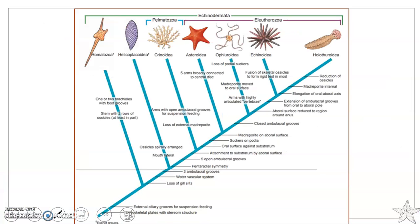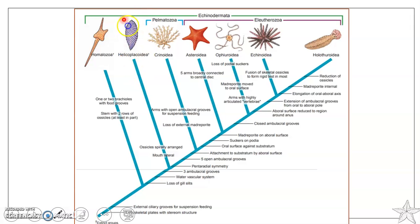Looking at the features from a phylogenetic perspective, the ancestors of Echinodermata had exoskeletal plates with stereome structure and external ciliary groups for suspension feeding. Such ancestors gave rise to the class Homalozoa, which includes only extinct organisms. Ancestors that lost gills while retaining an aquatic mode of life, developed a water vascular system and ambulacral grooves, and evolved into Helicoplacoidea — which had spirally arranged ossicles and a lateral mouth — also an extinct class.